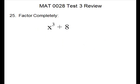Problem 25, factor completely. This time we have two terms. There's no GCF — we would look for that first. For two terms, our choice is squares or cubes. We have to look at the exponent, and this time our exponent is a 3. So we're going to try to do it as cubes. If we can get a cube root, we will be able to do it. So that's our first job — pick off your cube roots.